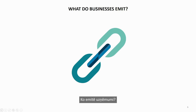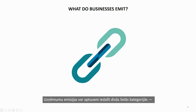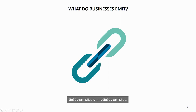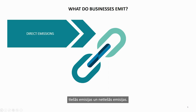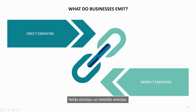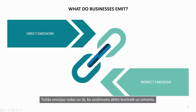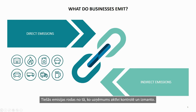So what do businesses emit? We can roughly break this down into two big categories: direct emissions and indirect emissions. Direct emissions come from something your company actively controls and uses — for example, fuels used for heating buildings, fuel for cars, and so on.